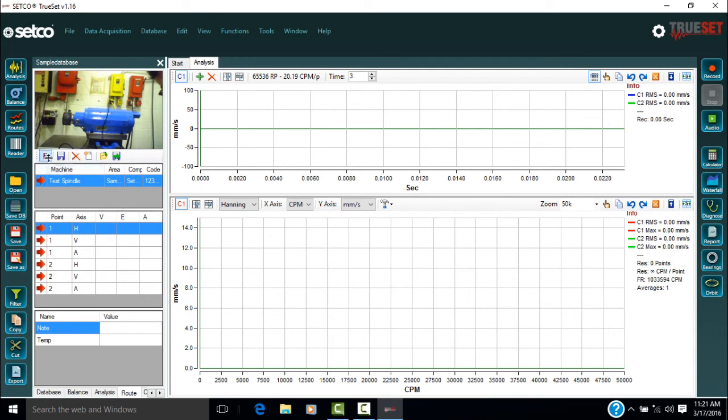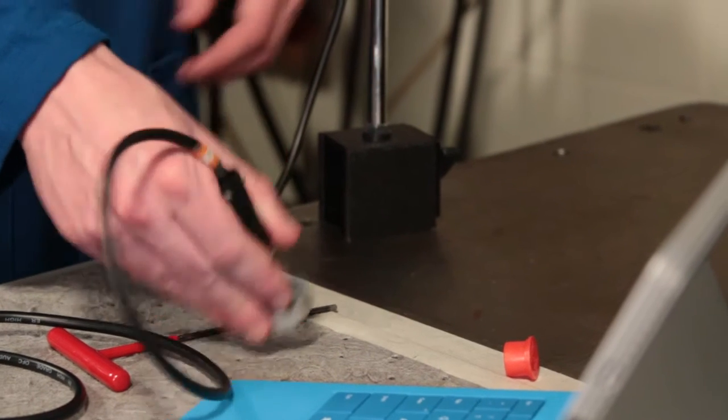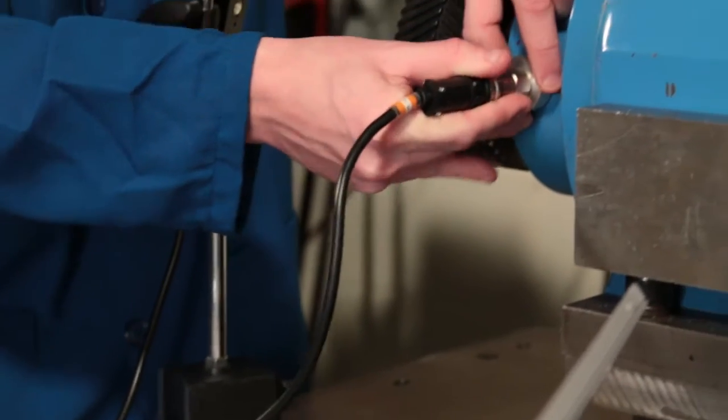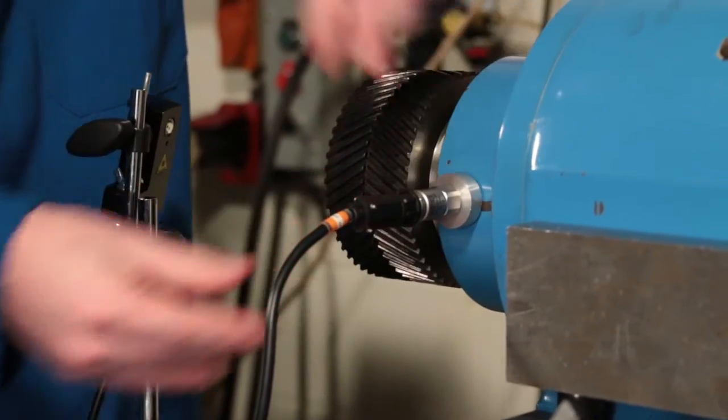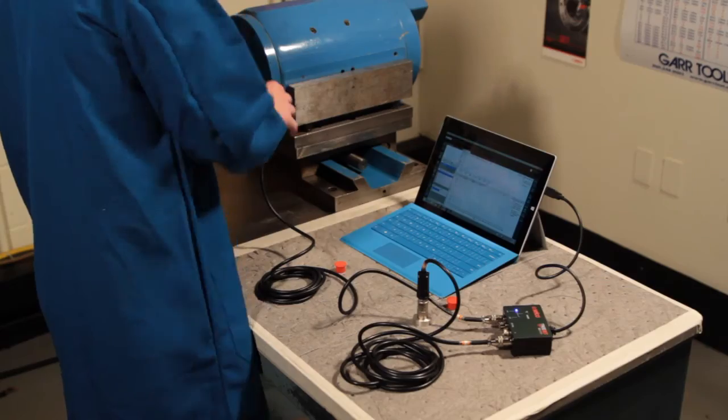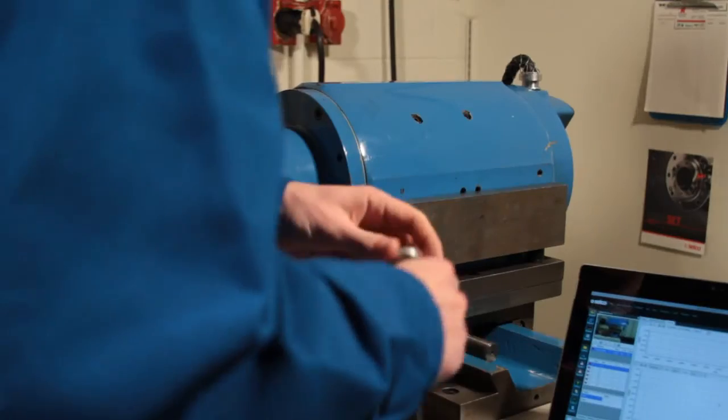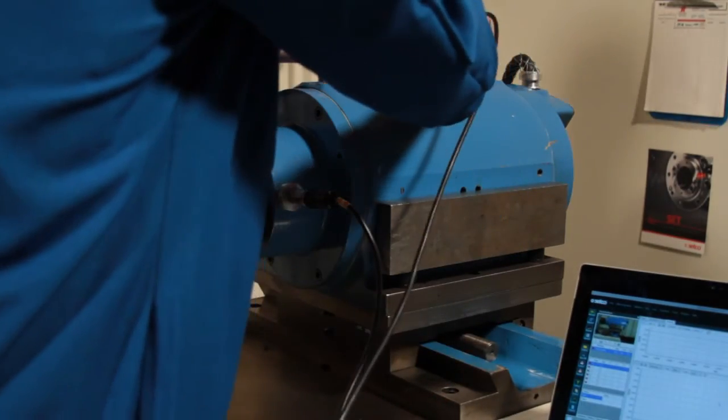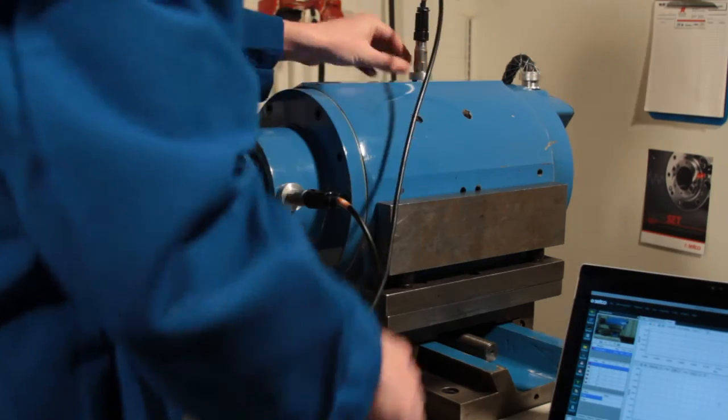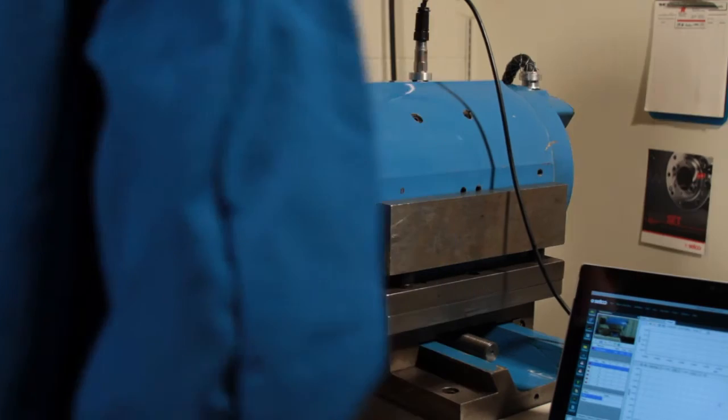If using the reference accelerometer, select the F button to activate it. The first accelerometer is placed in the horizontal position over the bearings to match the first axis in the route. This data will be taken first. Then, place the reference accelerometer anywhere on the equipment's body. This accelerometer cannot move from this position. Run the equipment at its typical operating RPM specified when entering equipment into the database.